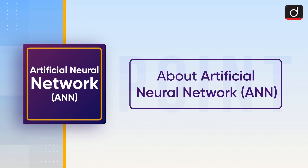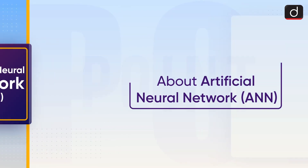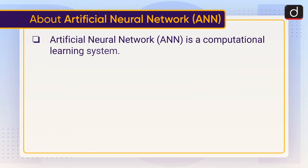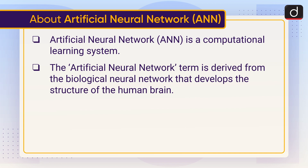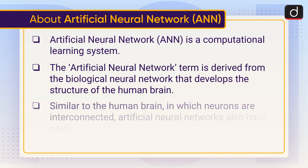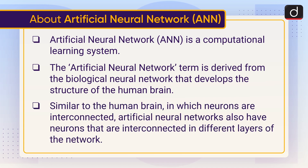Now let's discuss about Artificial Neural Network, that is ANN. ANN is a computational learning system. The term 'artificial neural network' is derived from the biological neural network that develops the structure of the human brain. Similar to the human brain, in which neurons are interconnected, artificial neural networks also have neurons that are interconnected in different layers of the network.